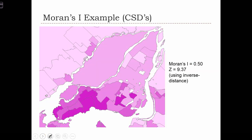Moran's I is also sensitive to scale issues. Rather than using dissemination areas — those small little block groups — we can use a larger neighborhood definition called the census subdivision. All that has changed is the level of aggregation used in our spatial units. Here we see that Moran's I drops from 0.75 to 0.5. It's still significant and still positive, but Moran's I is also sensitive to the level of aggregation used — and in fact it's probably even more sensitive to the level of aggregation than it is to our selection of how we define the W matrix.